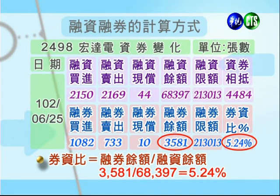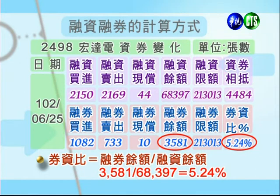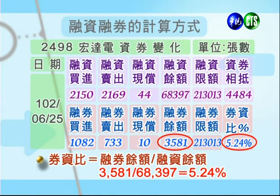券资比方面，6月25号宏达电的融券余额是3,581张，融资余额是68,397张，券资比大概是5.24%。一般来讲，如果券资比到了70%以上，被轧空的机率就非常大，各位同学必须要了解。